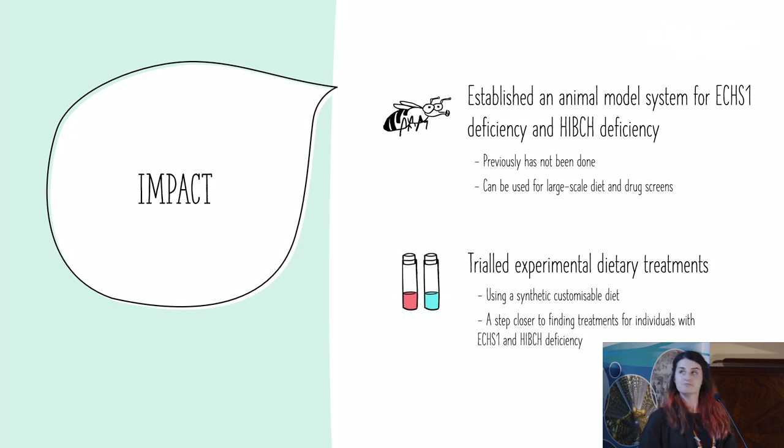So just bringing it all together, this kind of thing hasn't fully been done before by establishing full animal model systems for these two particular diseases. There are kind of cell models, but you don't capture the full animal system. And mice models haven't been specifically created or made for these two diseases. So now that I have these fly models established, the groundwork has kind of been done, and we can really go ahead with large-scale diet and drug screens using these models. I was able to show that these model systems do respond to changes in the diet, and they're using this special synthetic diet that has been recently developed for flies. And I tried treatments that were either trialed in the clinic or suggested by researchers, just the kind of things that are too experimental to test without an animal system. So this is all to learn more about these diseases and bring us closer to finding treatments for individuals with ECHI1 or HIBCH deficiency. Thank you.